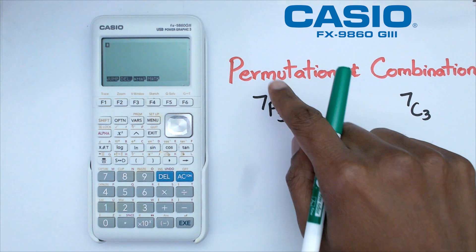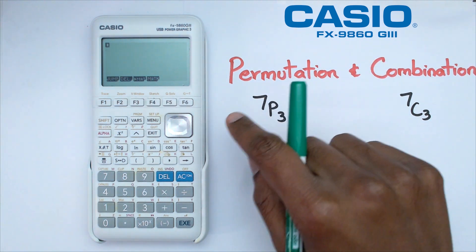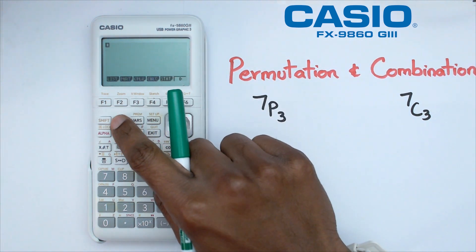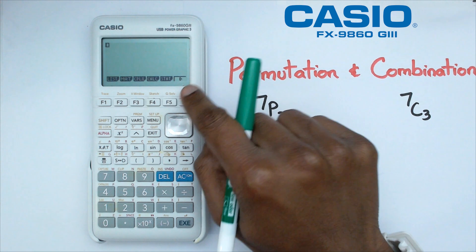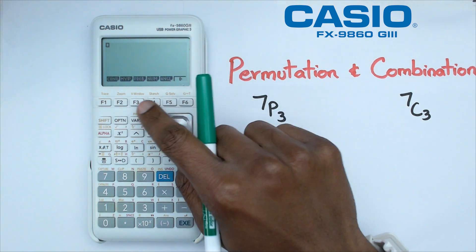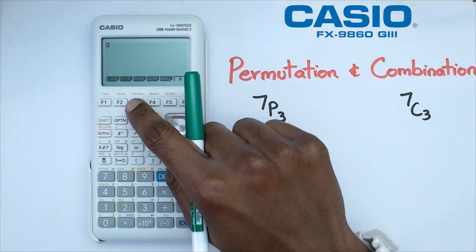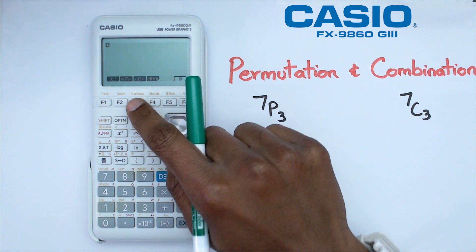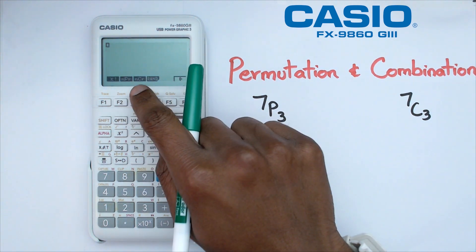Once you get here to solve a permutation of 7P3, what we're going to do is click on option, and we're going to navigate our way towards F6, which is the arrow here, and we're going to click on prob, which is F3. When you click on this, you're going to see NPR and NCR.